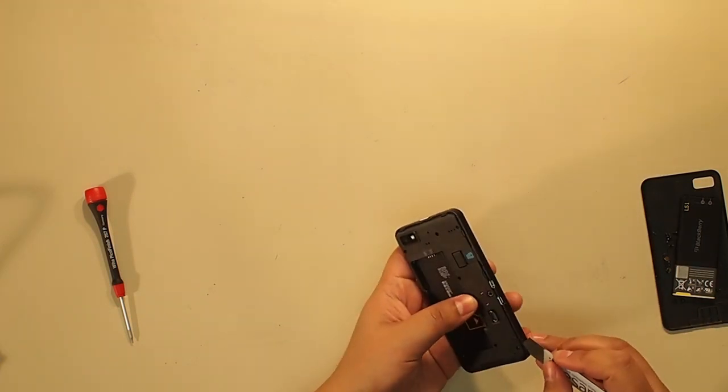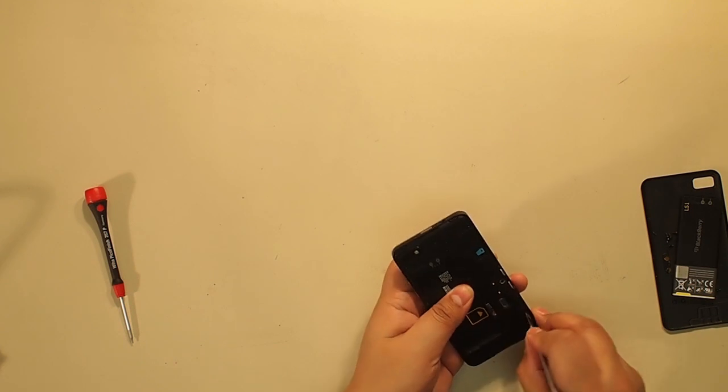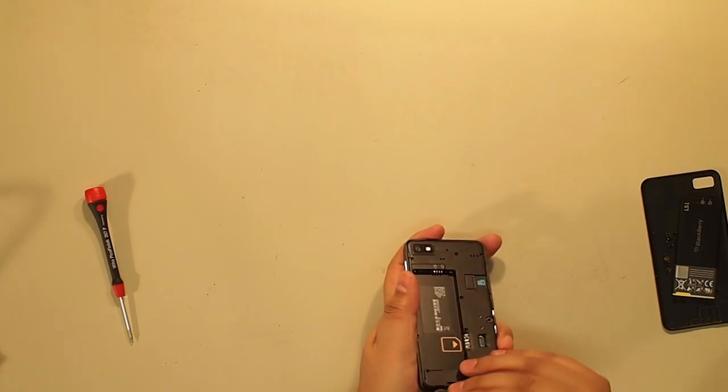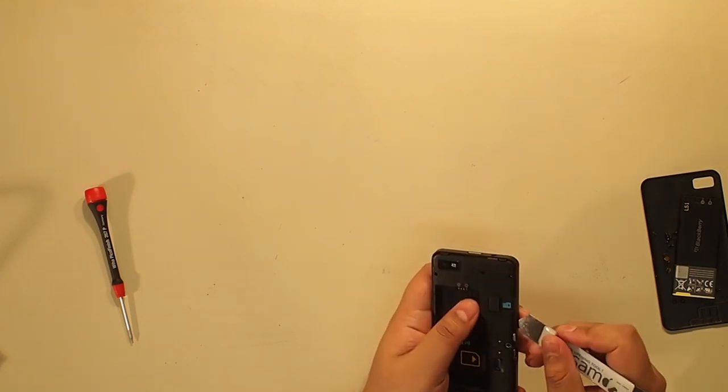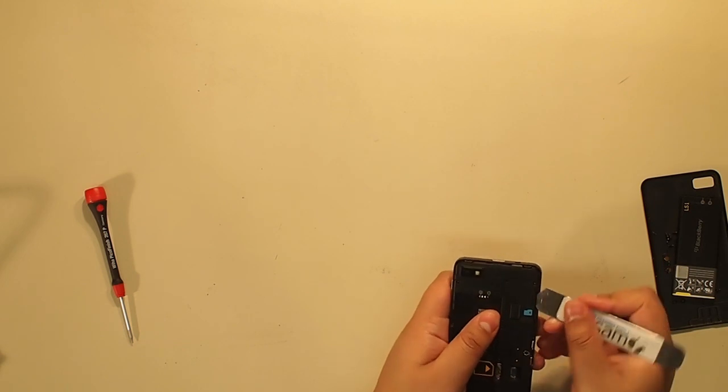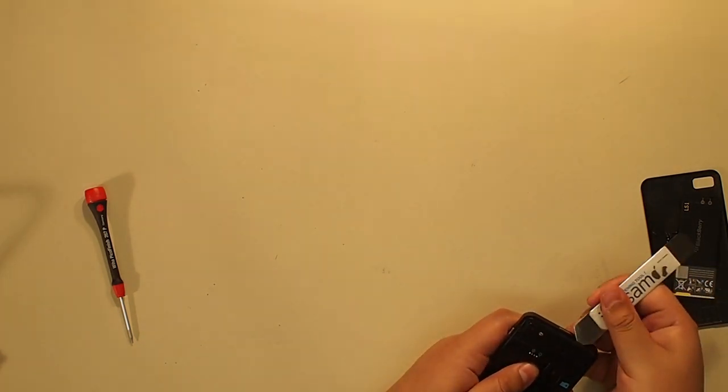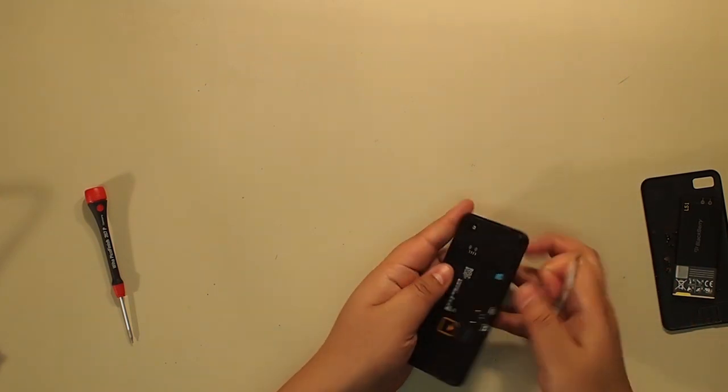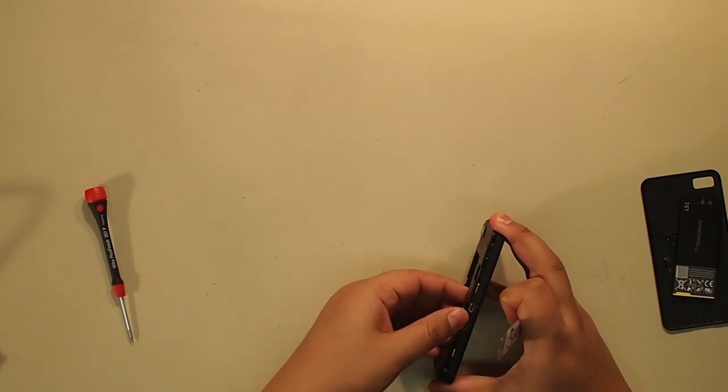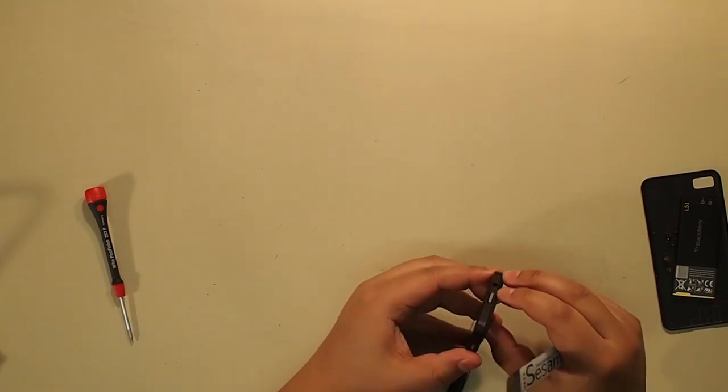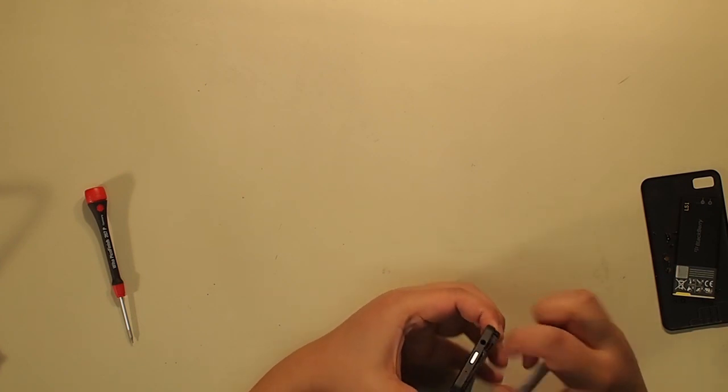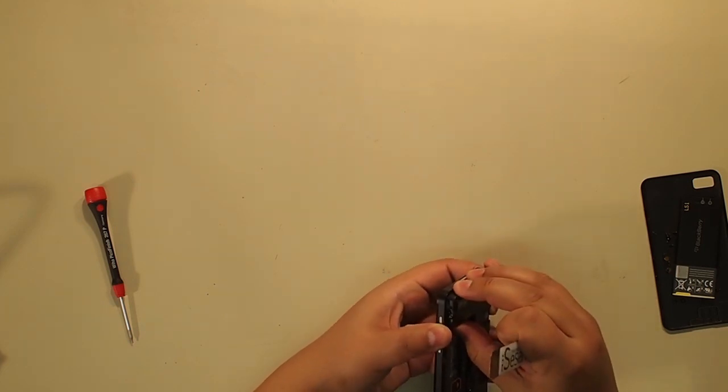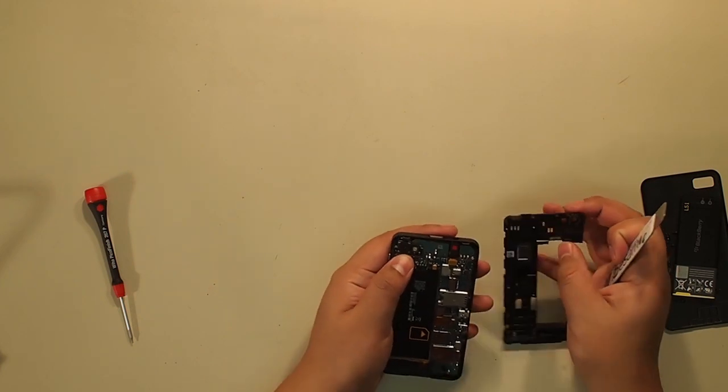Once all the screws are out, you will take the opening tool - prefer it be a plastic one, all I have is a metal one here but if you're careful it's okay - and just go around the edges and unclip all the clips that hold the backing in place. It's very simple to do. Just take your time, you don't want to break anything. Also don't stick the opening tool in, you might hit the motherboard or something else.